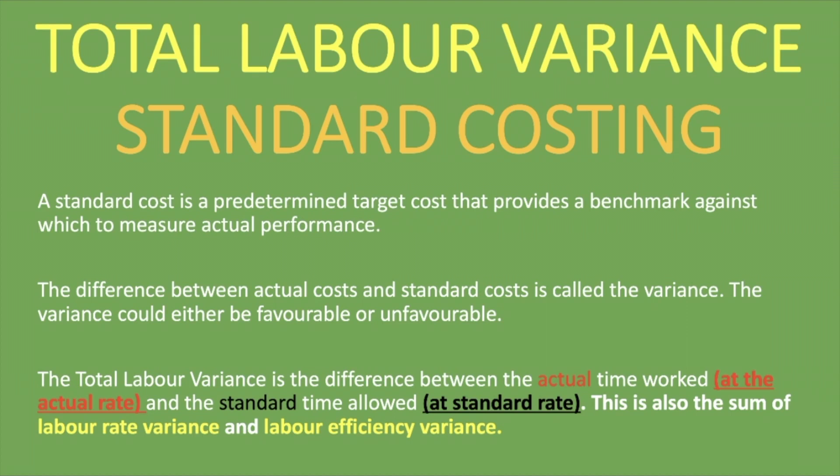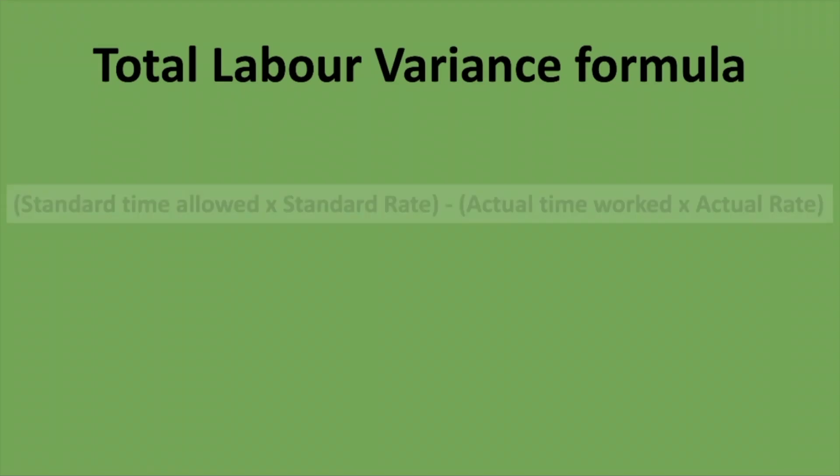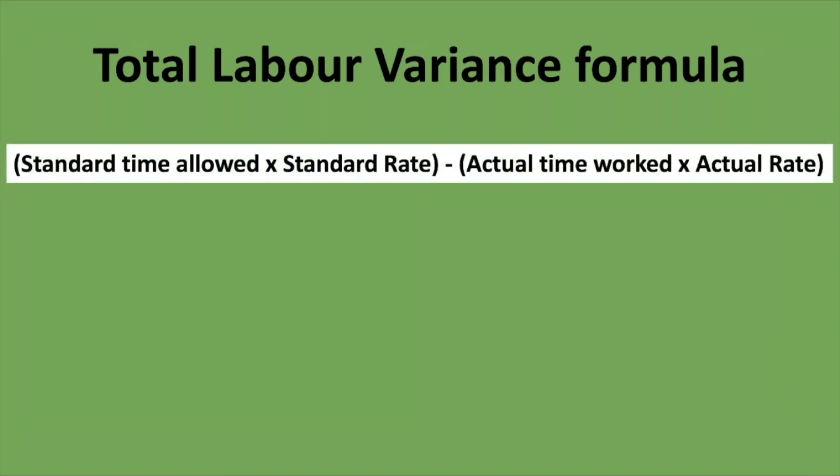The formula for the total labor variance is: standard time allowed multiplied by the standard rate, minus the actual time worked multiplied by the actual rate. The standards go together, and you deduct the actuals. It's as straightforward as that.